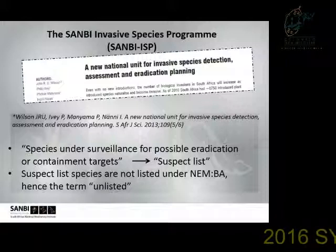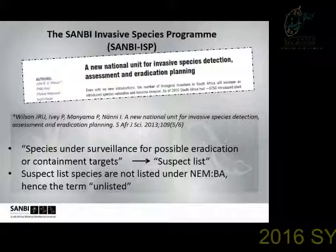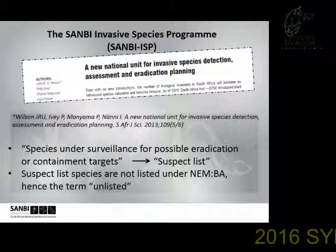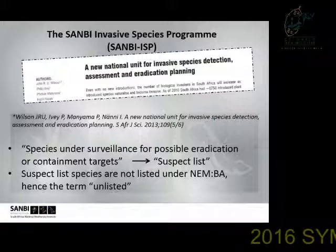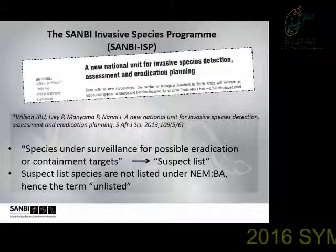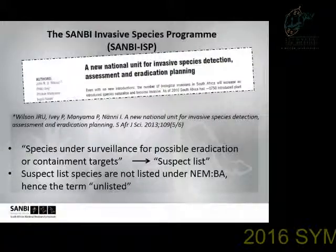There is also another category: plants on the suspect list — species under surveillance for possible eradication or containment targets. They are on the list, but they are technically unlisted, and in that sense these four species are unlisted.